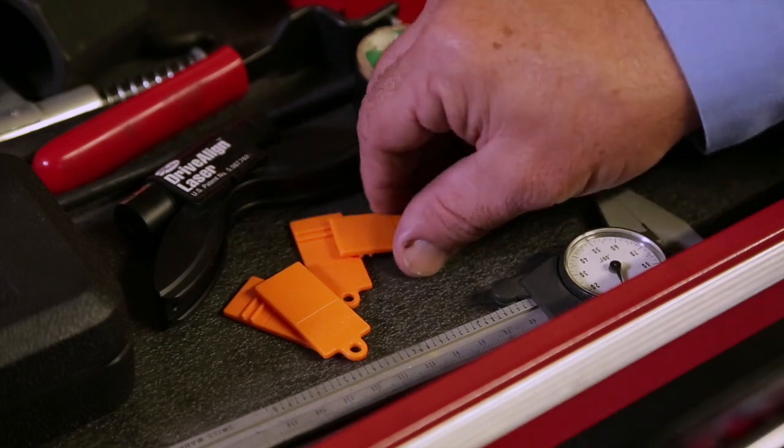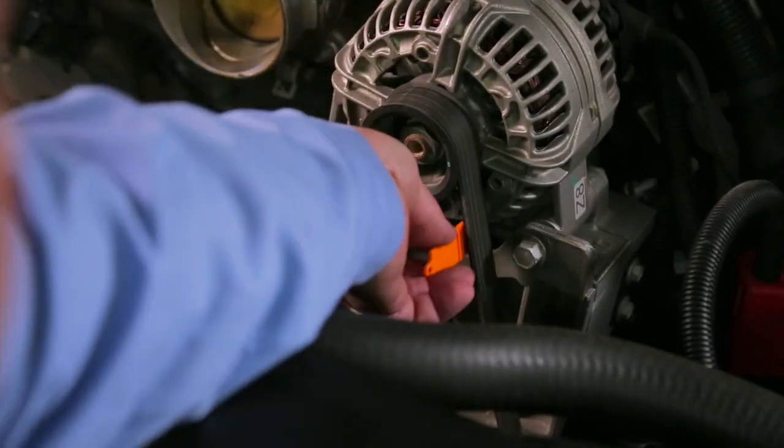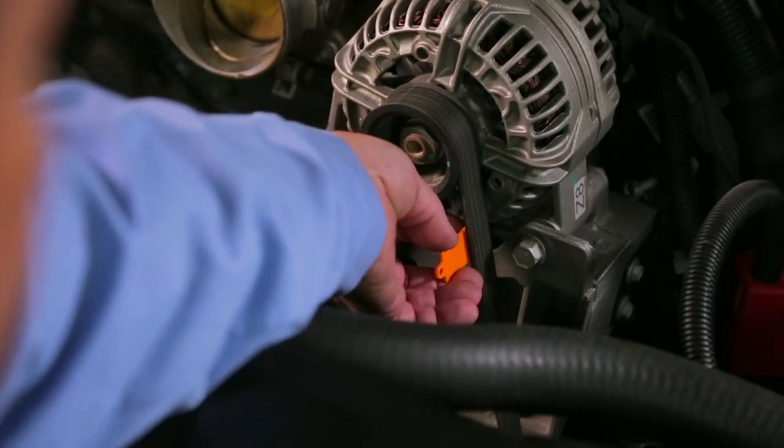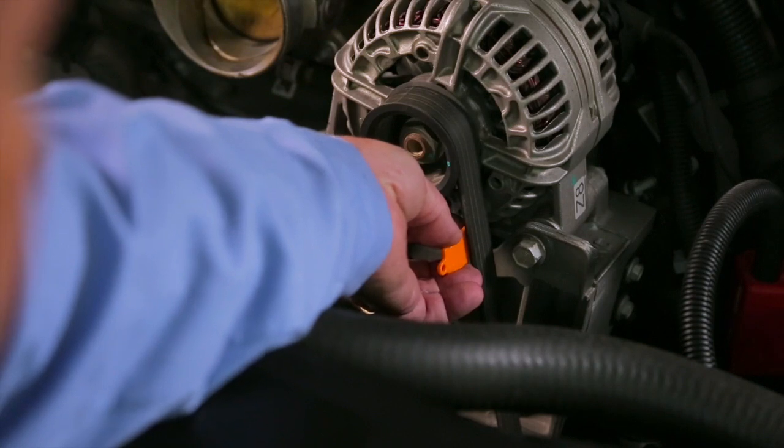The new Gates belt wear gauge was designed with the input of professional technicians and provides a simple and reliable way to determine if a serpentine belt has lost enough material to negatively affect performance and warrant replacement.